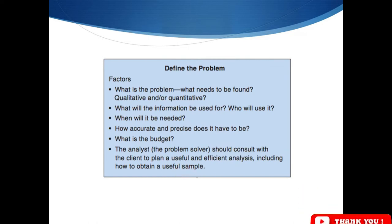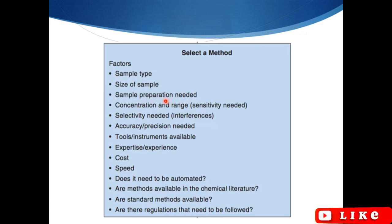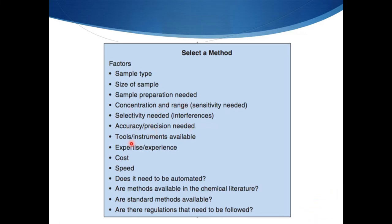Then we have to select a method: which sample type we are going to use, the size of the sample, and what sample preparation is needed. Some tests require sample preparation such as derivatization, precipitation, or solvent extraction. We must be sure in which form the sample should be present so that we can perform the analysis. Concentration and range are also important factors, along with the required accuracy and precision.